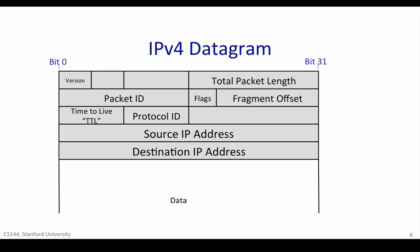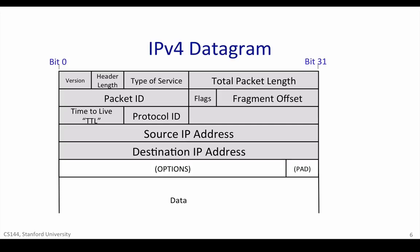Sometimes a packet is too long for the link it is about to be sent on. The packet ID, flags, and fragment offset all help routers to fragment IP packets into smaller self-contained datagrams, if need be. The type of service field gives a hint to routers about how important this packet is. The header length tells us how big the header is. Some headers have optional extra fields to carry extra information. Finally, a checksum is calculated over the whole header, so just in case the header is corrupted, we're not likely to deliver a packet to the wrong destination by mistake.